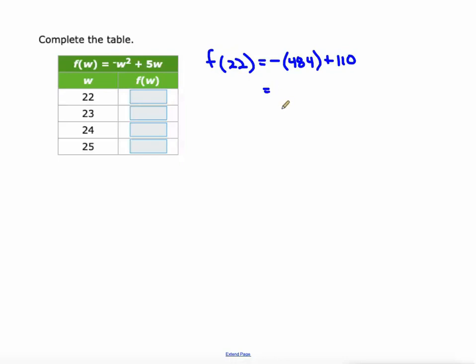So negative 484 plus 110 is negative 374. All right. What about f at 23? Again, it's gonna be the opposite of 23 squared. 23 squared is 529, plus 5 times 23 which is 115. So negative 529 plus 115. That's negative 414.